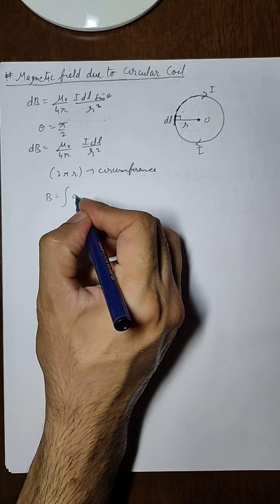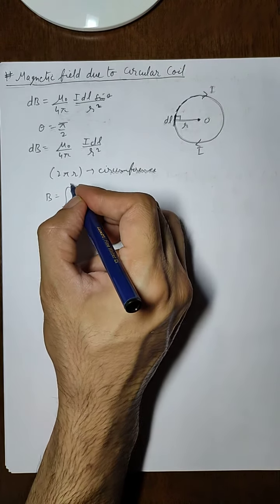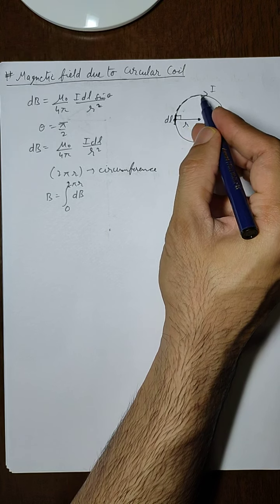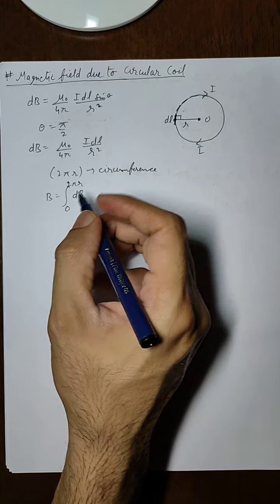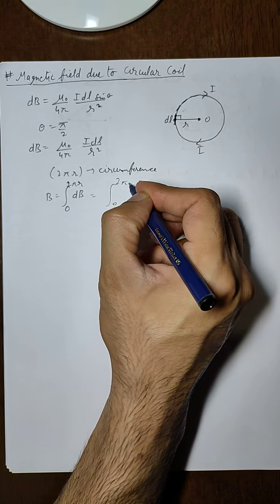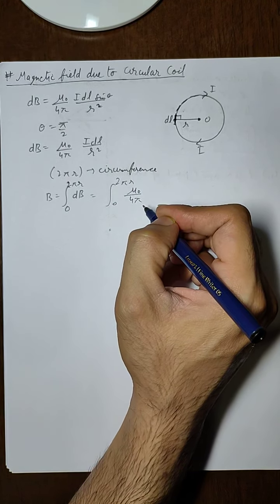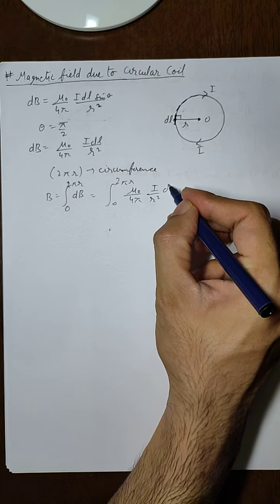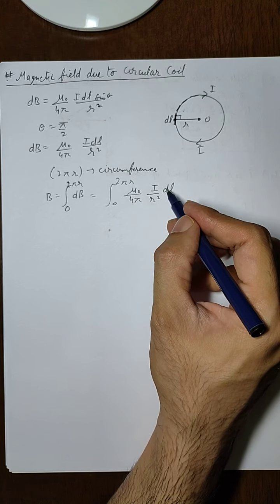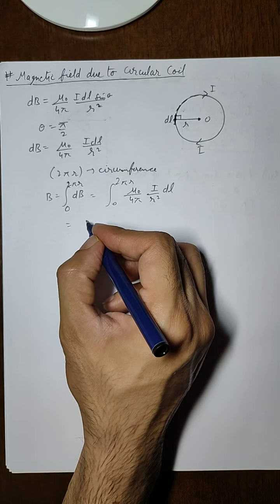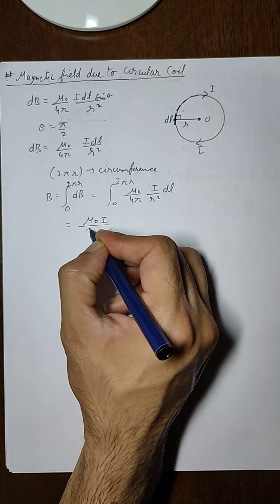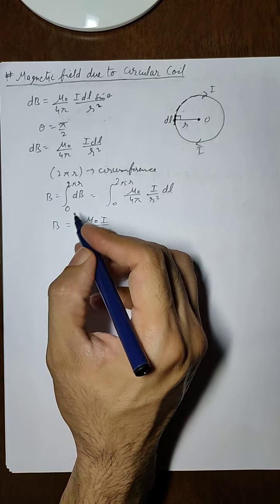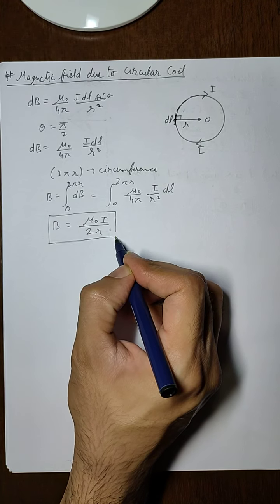We can say that B equals the integral of dB from 0 to 2πr. Substituting, this becomes the integral from 0 to 2πr of μ₀/4π · i/r² · dl. The integration of dl gives 2πr, so the final expression is B = μ₀i/2r. This is the magnetic field due to a circular current-carrying coil.